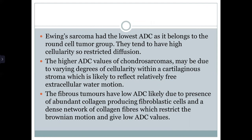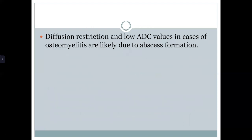The higher ADC values of chondrosarcoma may be due to varying degrees of cellularity within a cartilage and stroma, which reflects relatively free extracellular water motion. The fibrous tumors have low ADC likely due to the presence of abundant collagen-producing fibroblastic cells and a dense network of collagen fibers, which restricts Brownian motion and gives low ADC values. Diffusion restriction and low ADC values in osteomyelitis are likely due to its formation characteristics.